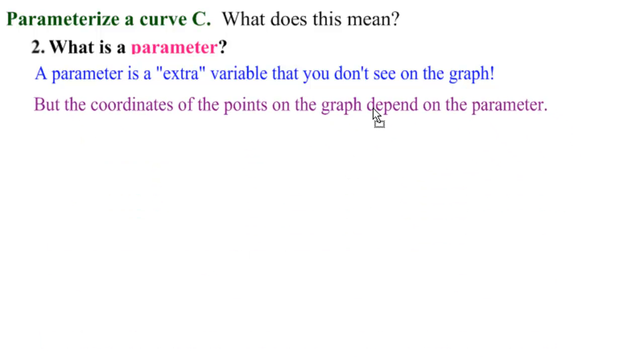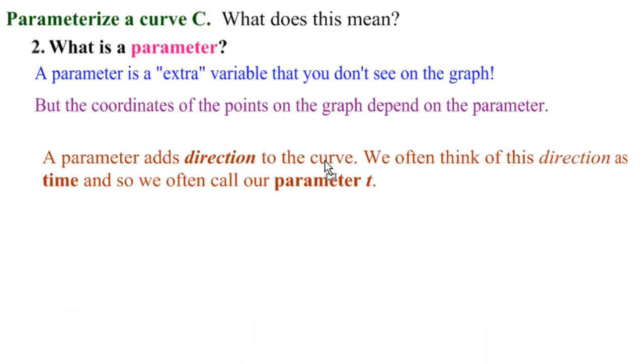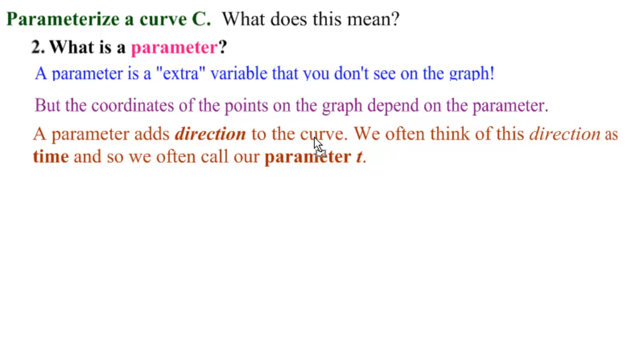However, the coordinates of the points on the graph depend on the parameter. And what's most important is the parameter adds direction to the curve. We often think of this direction as time, and so that's why we often call our parameter T.